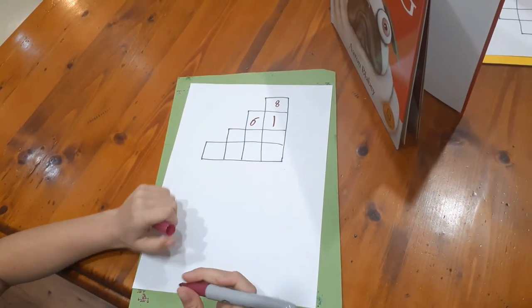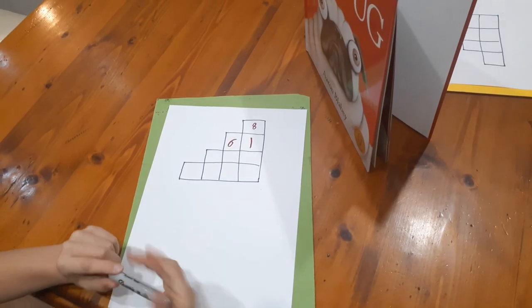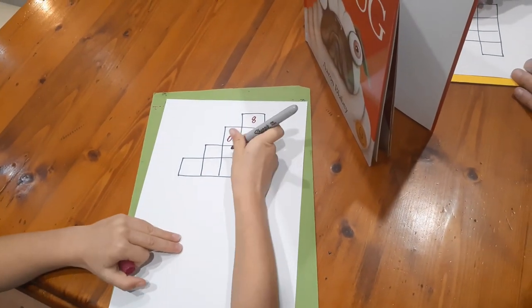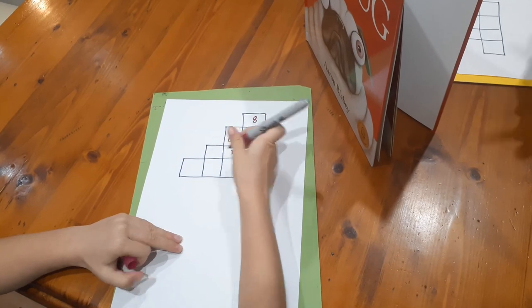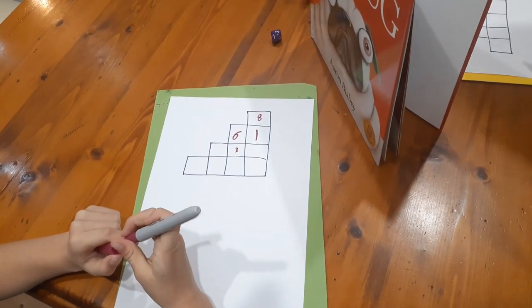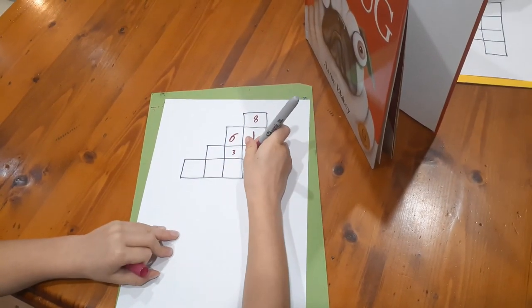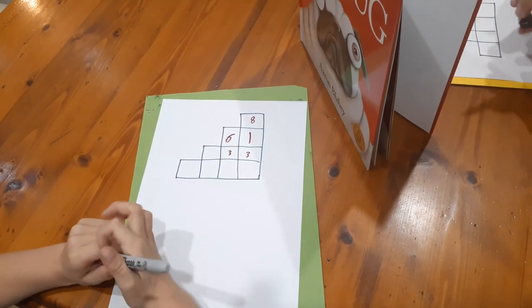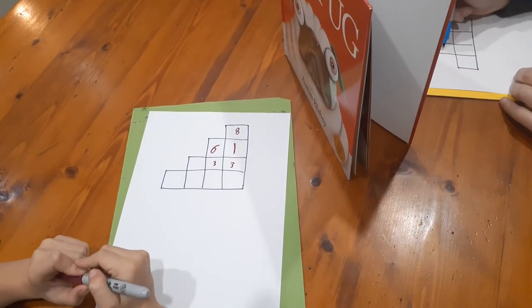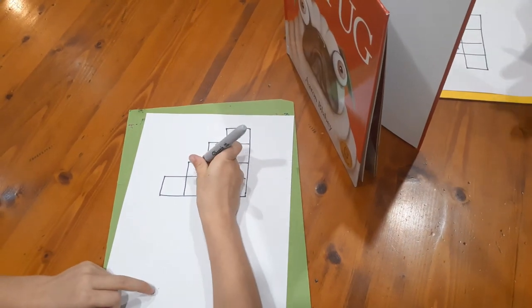And then round three, we've got three choices to make. So we started off with a three, then we've got another three, and then we've got a two. Interesting.